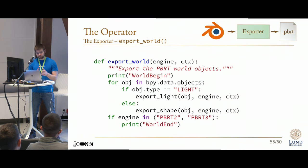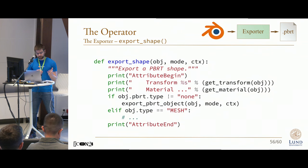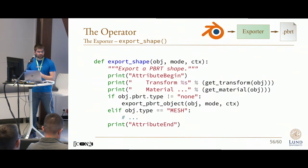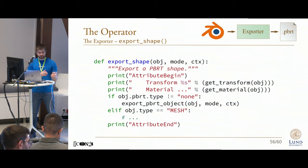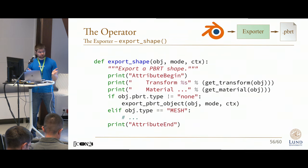For the world objects themselves, there is nothing really unexpected happening. We simply traverse the list of scene objects and print out an appropriate representation for each of them. For a single shape, we print an attribute begin and end wrapper to avoid materials and transforms from affecting other objects, then print out the actual transform and material for that object. Then we check if the object is marked as a proxy — if that's the case, handle it specially and print out that object in the same kind of representation as for the rendering property. Otherwise, find some kind of way of converting the Blender object to something that PBRT can recognize, such as meshes. Otherwise, issue a warning.